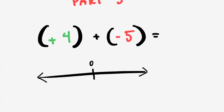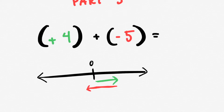I think about positive four and its general size — positive four could be around there. And then I think about the negative five. If I put negative five on here, I know it went in the opposite direction, and I also know that it's a little bit bigger than positive four. So I know that my answer is definitely going to be negative — one is going to go to the right and one is going to go to the left, and the one going to the left is longer. Therefore we're going to end up left of zero on the number line.